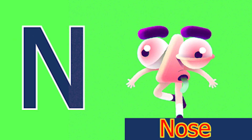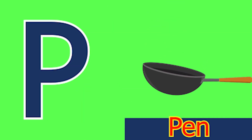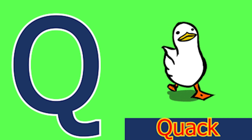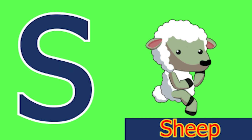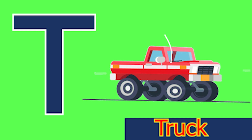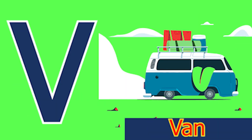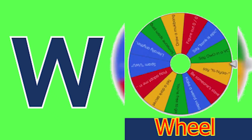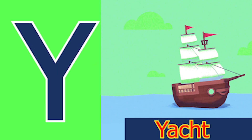N for nose, O for ox and P for pan, Q for quack and R for rain, S for sheep and T for tub, U for utensil, B for van, W for wheel and X for accessory, Y for yacht and Z for zone.